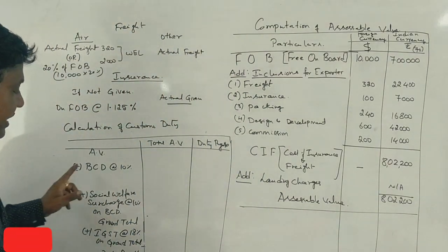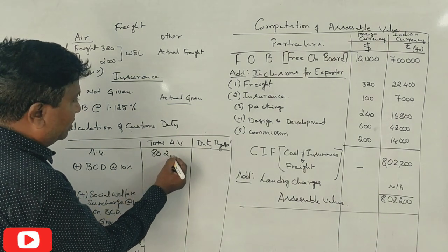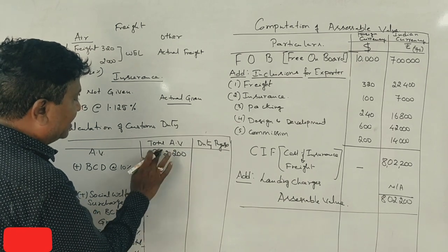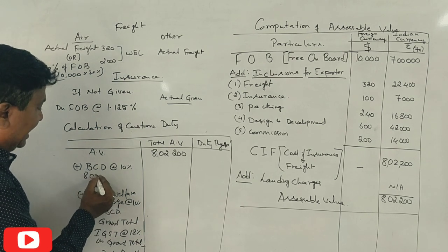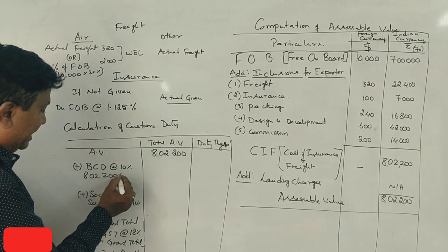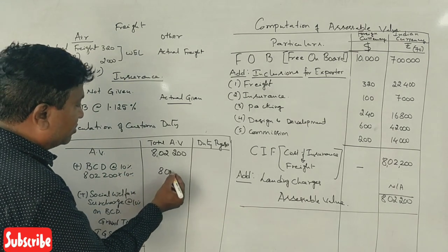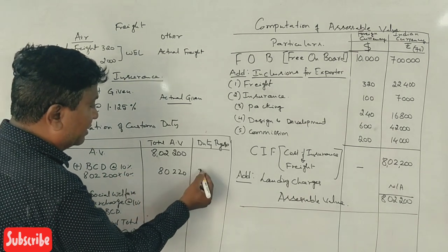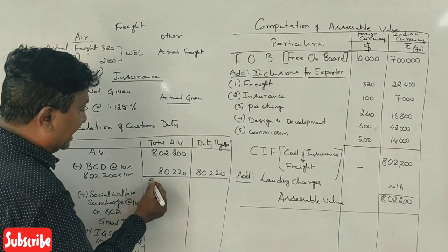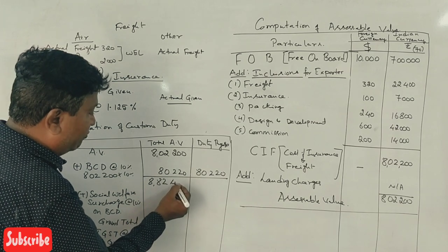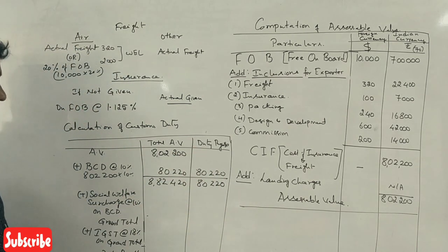Customs Duty calculation. First, the Assessable Value is ₹8,22,200. Basic Customs Duty at 10% on ₹8,22,200 equals ₹82,220. Total so far: ₹8,82,420. BCD of ₹82,220 — correct.